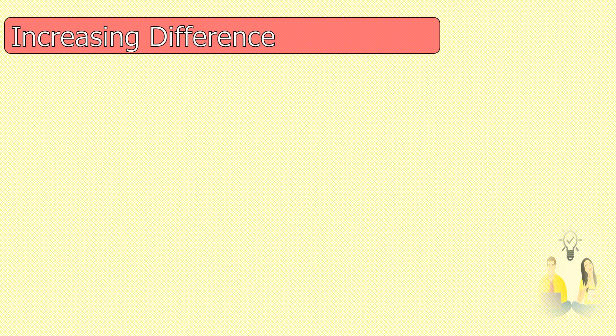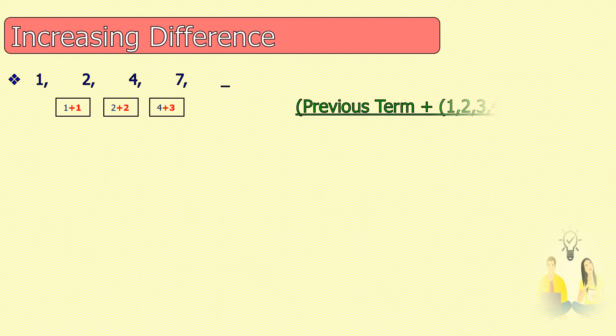Increasing difference: we may not always have the same difference between numbers in a series. Sometimes the difference between the numbers will be increasing. Here we can see that 1+1=2, but 2+2=4, and so on.